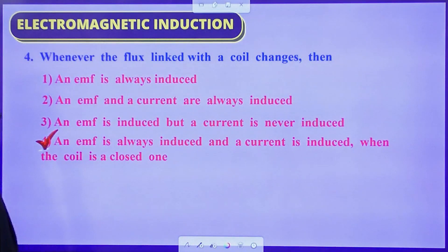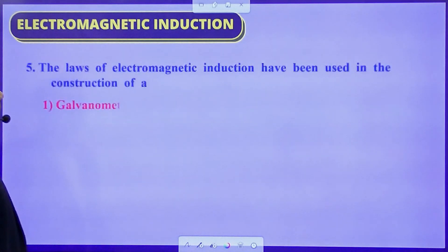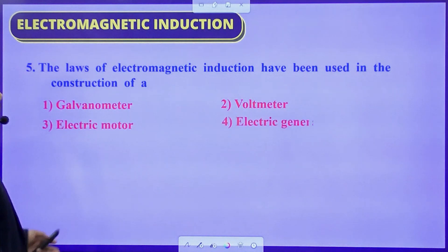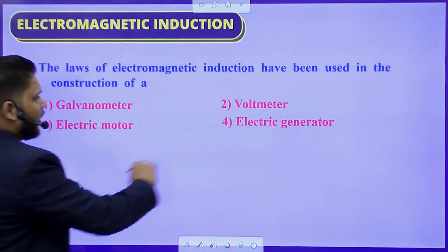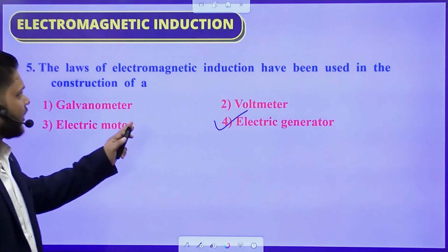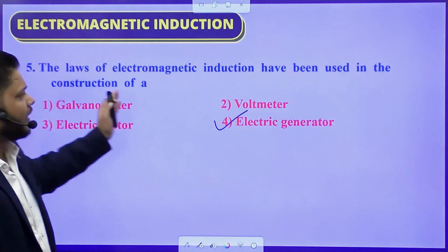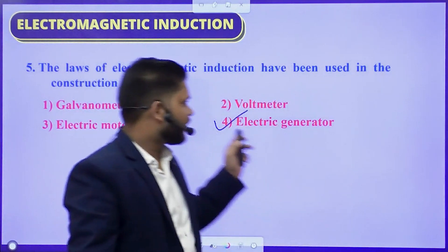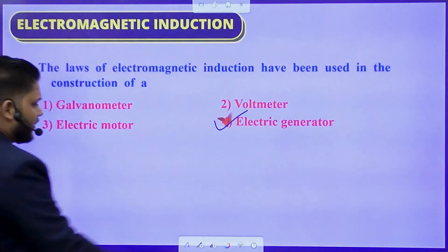Question number 5: The laws of electromagnetic induction have been used in the construction of — galvanometer, voltmeter, electric motor, or electric generator. The principle of electromagnetic induction is used in the construction of an electric generator.